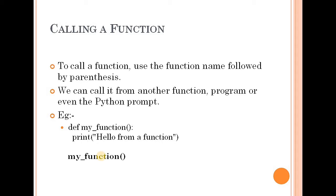How do you call a function? Use the function name followed by parentheses. For example, to call myfunction, you write myfunction with parentheses. That is how you call a function in Python.